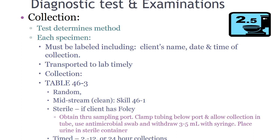If the client has a Foley catheter and a sterile collection is ordered, obtain the specimen through the sampling port. Clamp the tubing below the port and allow collection to occur in the tube. Use an antimicrobial swab and withdraw three to five milliliters with a syringe. Place the urine in a standard or sterile container. For timed urine collections — usually at 2, 12, or 24 hours — time begins after the client urinates and ends with the final voiding at the end of the time period.